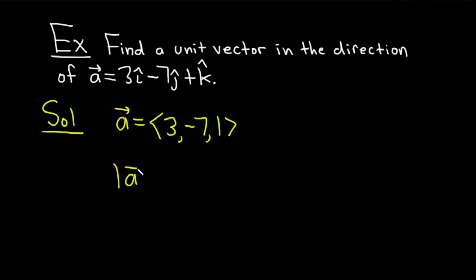So the magnitude of a... So this time we have three components, but the formula is very, very similar. Basically you square each component and you add them. So you would get 3 squared plus negative 7 squared plus 1 squared. So this ends up being 9 plus 49 plus 1. So you end up with the magnitude of a equal to the square root of 59.